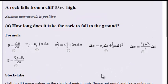A rock falls from a cliff 55 meters high. Assume that downwards is positive. How long does it take the rock to fall to the ground?